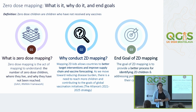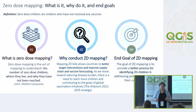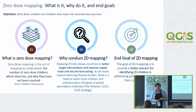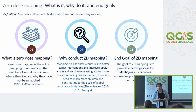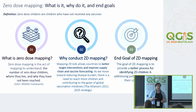What is zero-dose? Zero-dose means a child who has not had any immunizations. Under-vaccinated means the child has had some vaccinations, but not all. Zero-dose mapping is the act of mapping to understand the number of zero-dose children, where they live, and why they haven't been reached. We conduct this to better target interventions, improve supply chain, and vaccine forecasting. Our end goal is to provide a better process for identifying zero-dose children and the barriers that caregivers face in accessing health care.